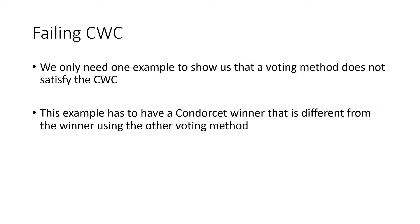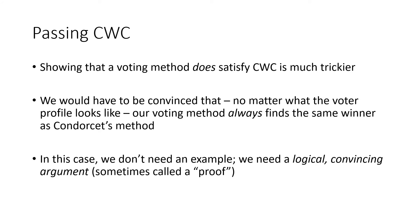We only need one example to disprove a method. If we're analyzing a voting method and we find one example where our method doesn't match the Condorcet winner, that's all we need to show the method doesn't satisfy the Condorcet Winner Criterion. But to show that a method does satisfy it is much harder — we would have to show that no matter what the voter profile looks like, the winner declared by our method would always match the Condorcet winner. We'd have to consider all possibilities, and that's a much higher bar to pass.